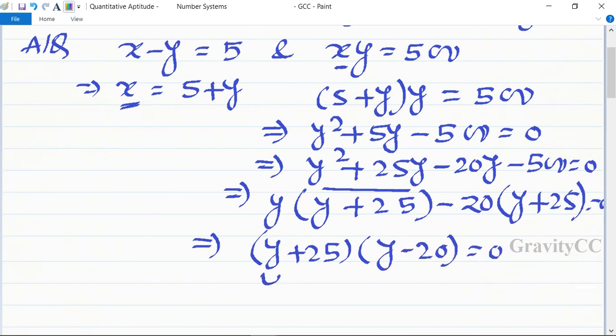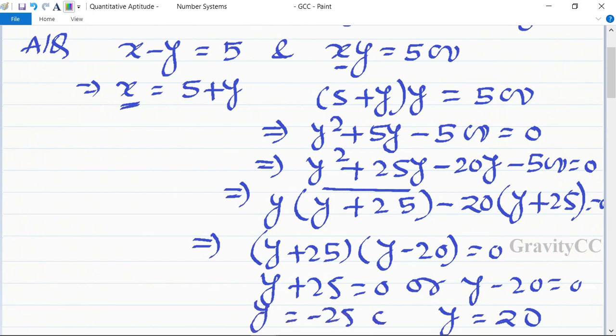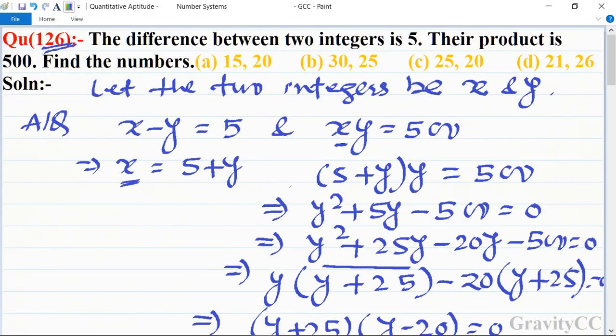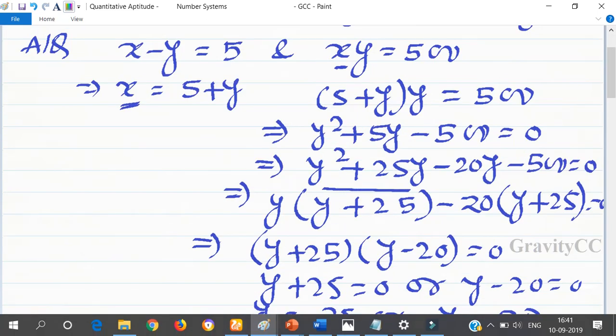to 0. So y plus 25 is equal to 0, or y minus 20 is equal to 0, giving y equal to 20 and y equal to minus 25. In the options, only positive integers are given, so we can't take y equal to minus 25.